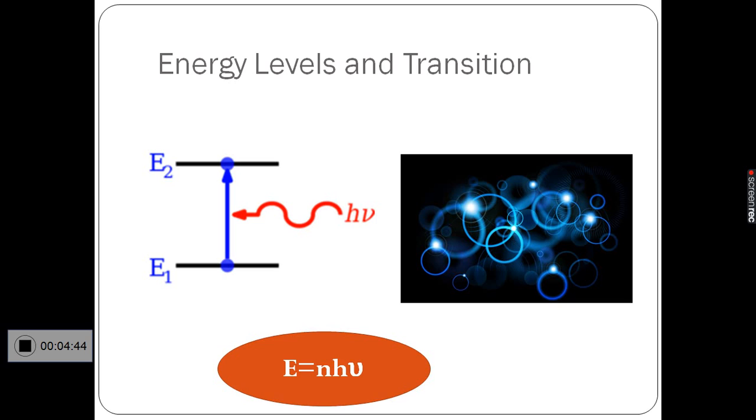Each discrete bundle carries energy hν, where h is Planck's constant, whose value is 6.626 × 10⁻³⁴ joule-seconds. Each discrete bundle of energy is called a quantum of energy.